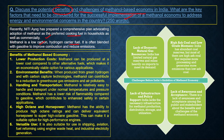Methanol is often blended with gasoline — that is, methanol is blended with petrol. Due to this blending, during combustion the carbon emissions are reduced. Because methanol has lower carbon content compared to gasoline, blending it reduces overall carbon emissions during combustion.